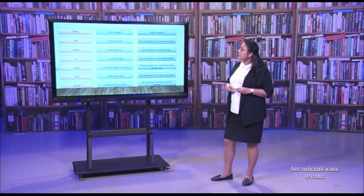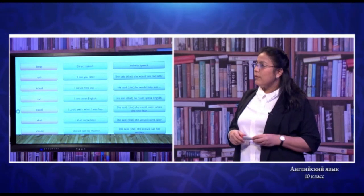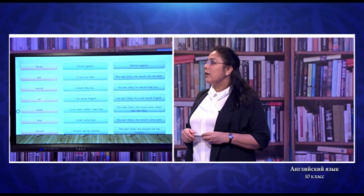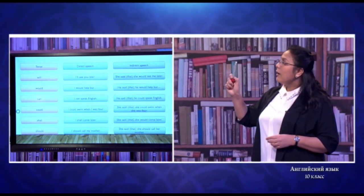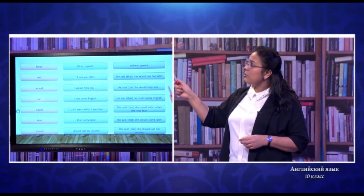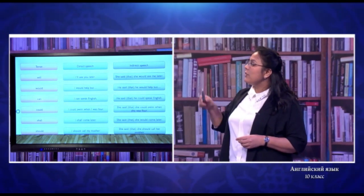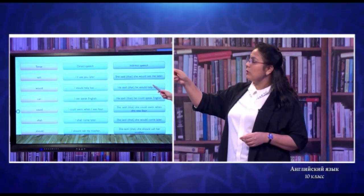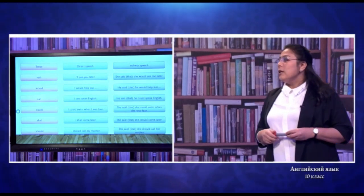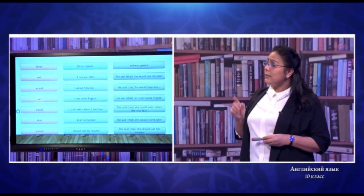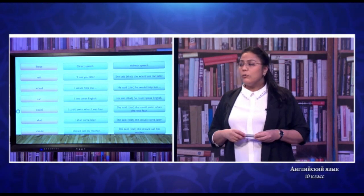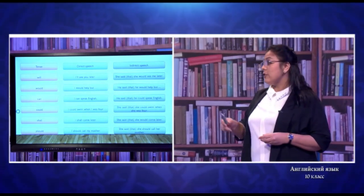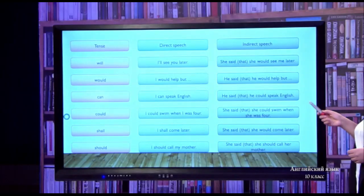With future words or modal verbs: with 'will' — 'I'll see you later.' If we change it into reported past, we change 'will' into 'would': 'She said she would see me later' — we changed both 'will' to 'would' and 'you' to 'me'. Next, 'would' stays as it is: 'I would help' becomes 'He said he would help.' With the modal 'can': 'I can speak English' becomes 'He said he could speak English' — 'can' changes to 'could'. If we use 'could', it stays as it is: 'I could swim when I was four' becomes 'She said she could swim when she was four.'